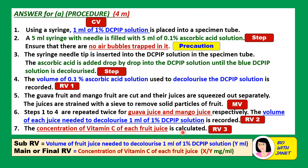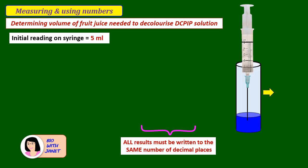Then the concentration of vitamin C of each fruit juice is calculated — this is your main and final RV. The concentration of vitamin C in the fruit juice can be calculated using the formula X over Y mg/ml, where X is the volume of ascorbic acid used and Y is the volume of fruit juice used to decolorize 1 ml of DCPIP solution.